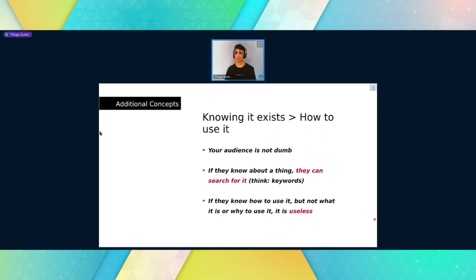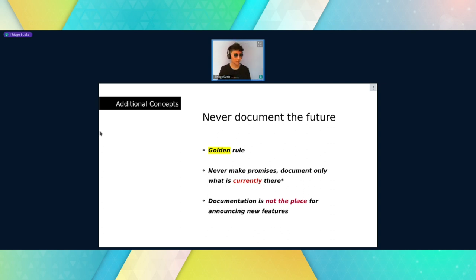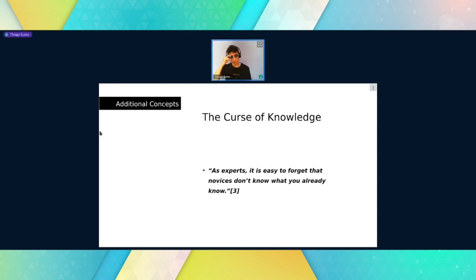Telling the user the documentation exists is useful. Telling them what it is or why to use it is even more important — if the user doesn't see why to use your product, there is no need to explain how it works. Never document the future. Never make promises — only talk about the present. Promises are commitments and you might not be there to provide that commitment later on. Documentation is really not the place for this sort of thing.